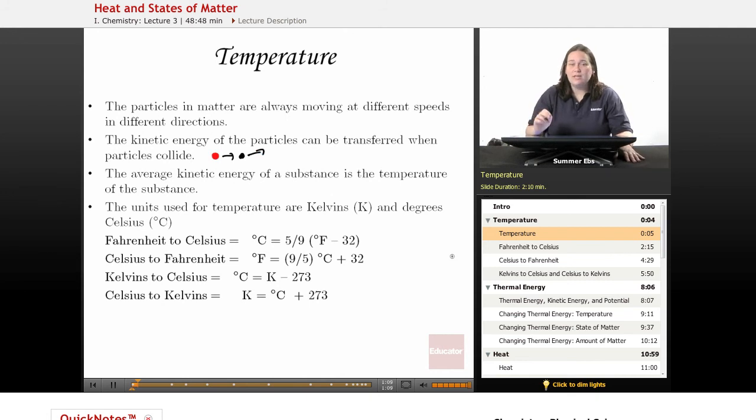The average kinetic energy of the substance, so the average of how fast these particles are moving, is called the temperature of the substance. So when you put a thermometer into a substance, what you're actually measuring is the speed that the particles are moving, the average speed. Not all particles are moving at the same speed, even though the substance is the same temperature.